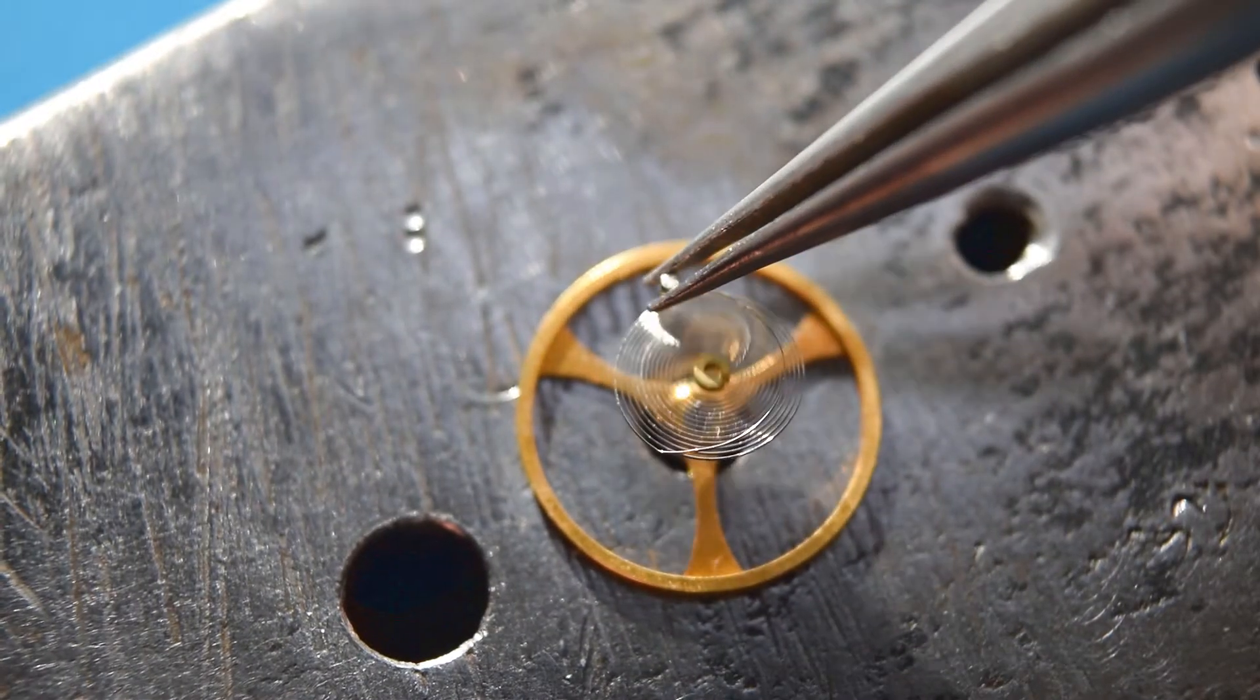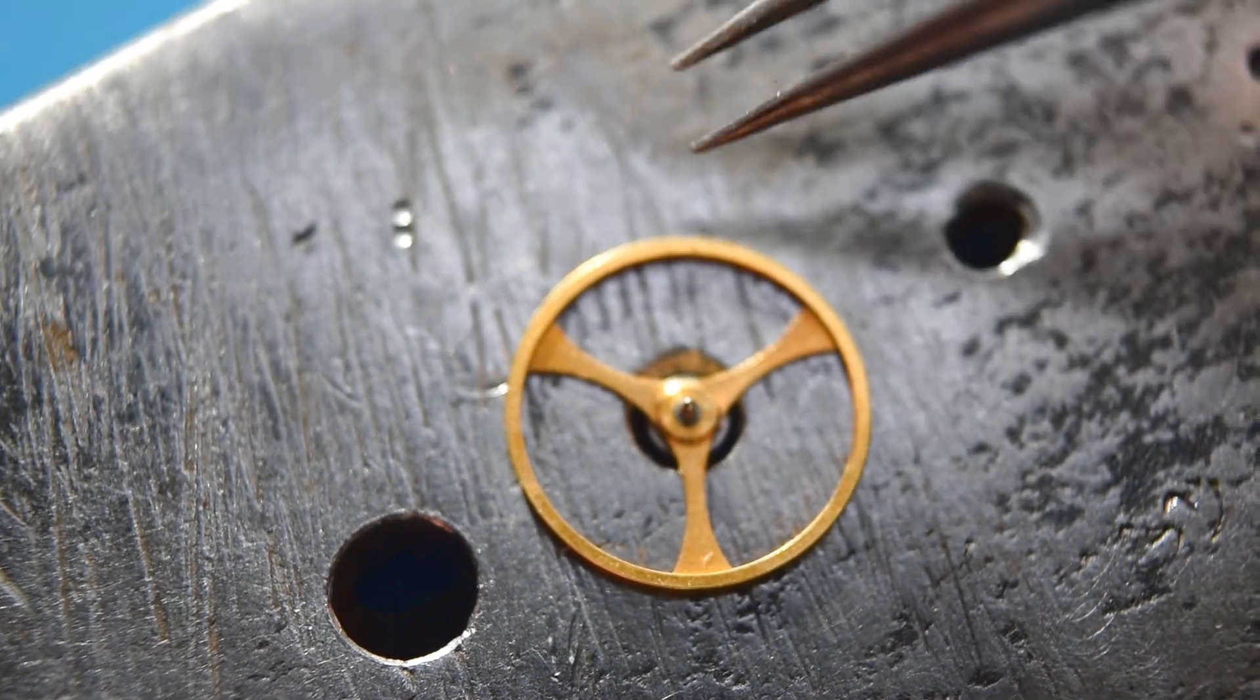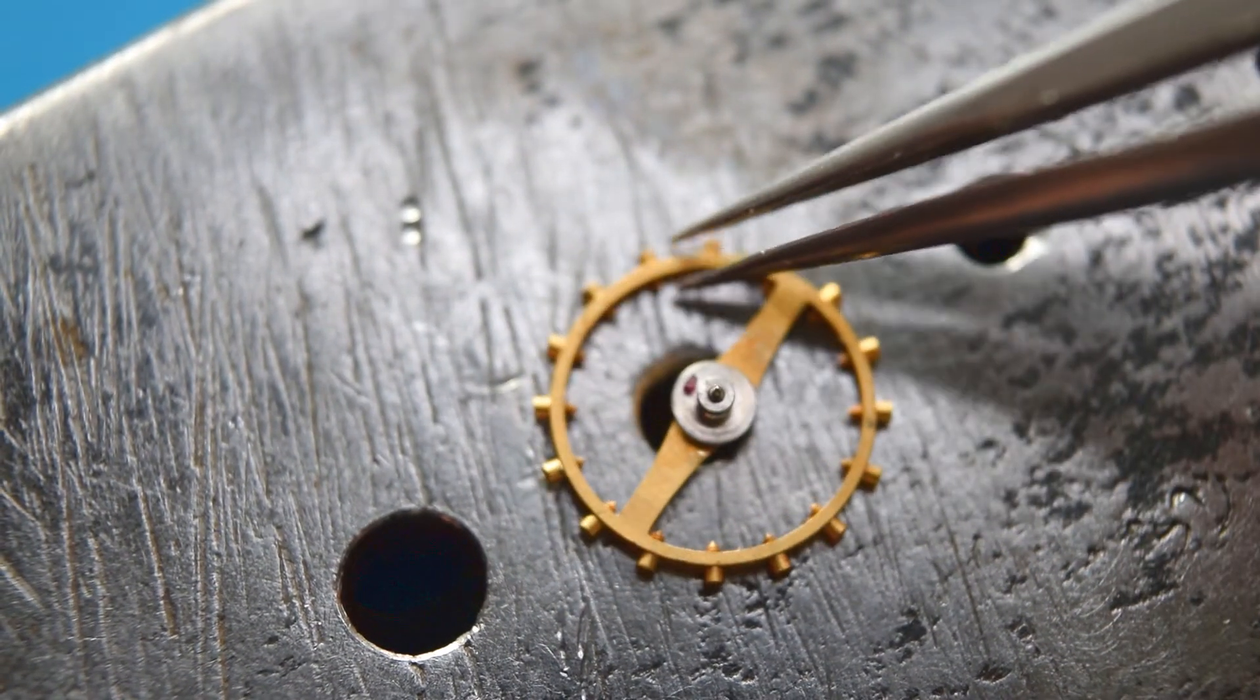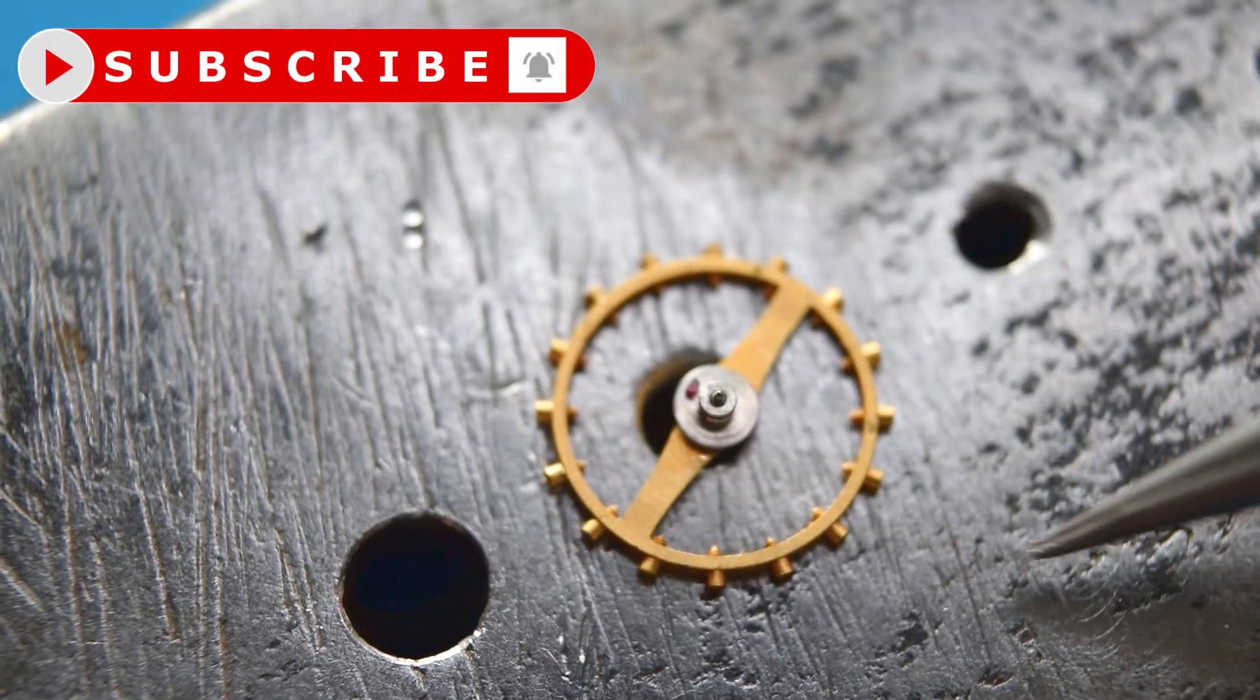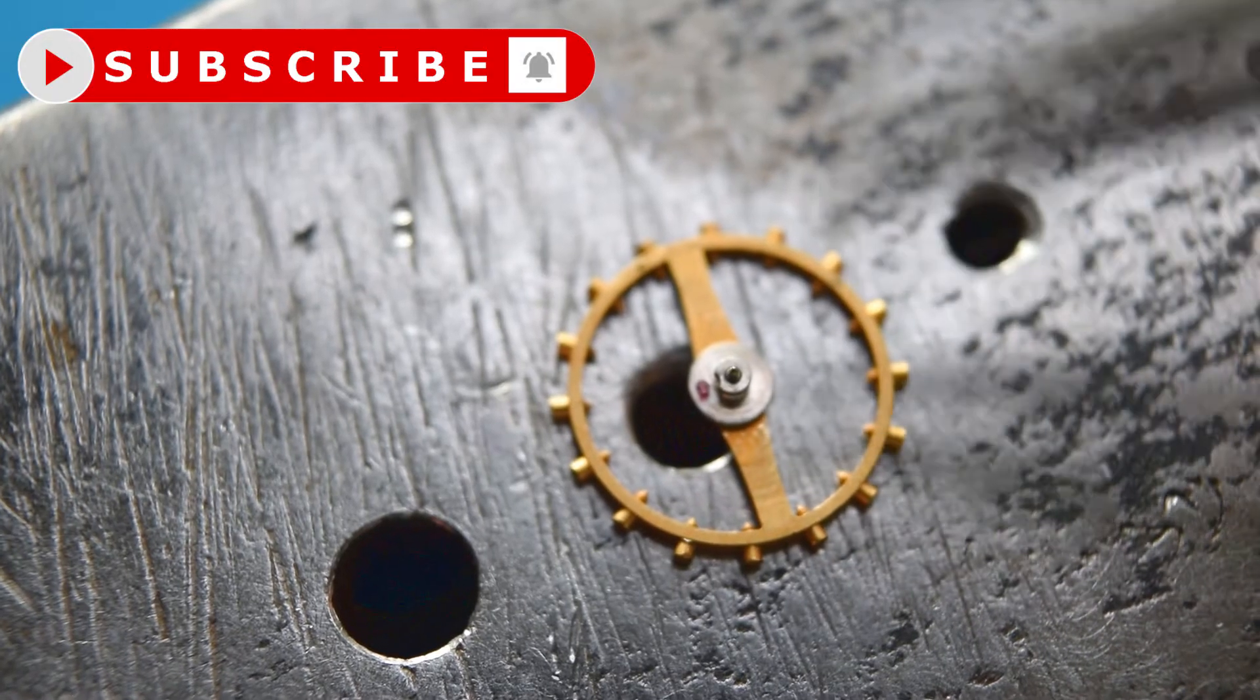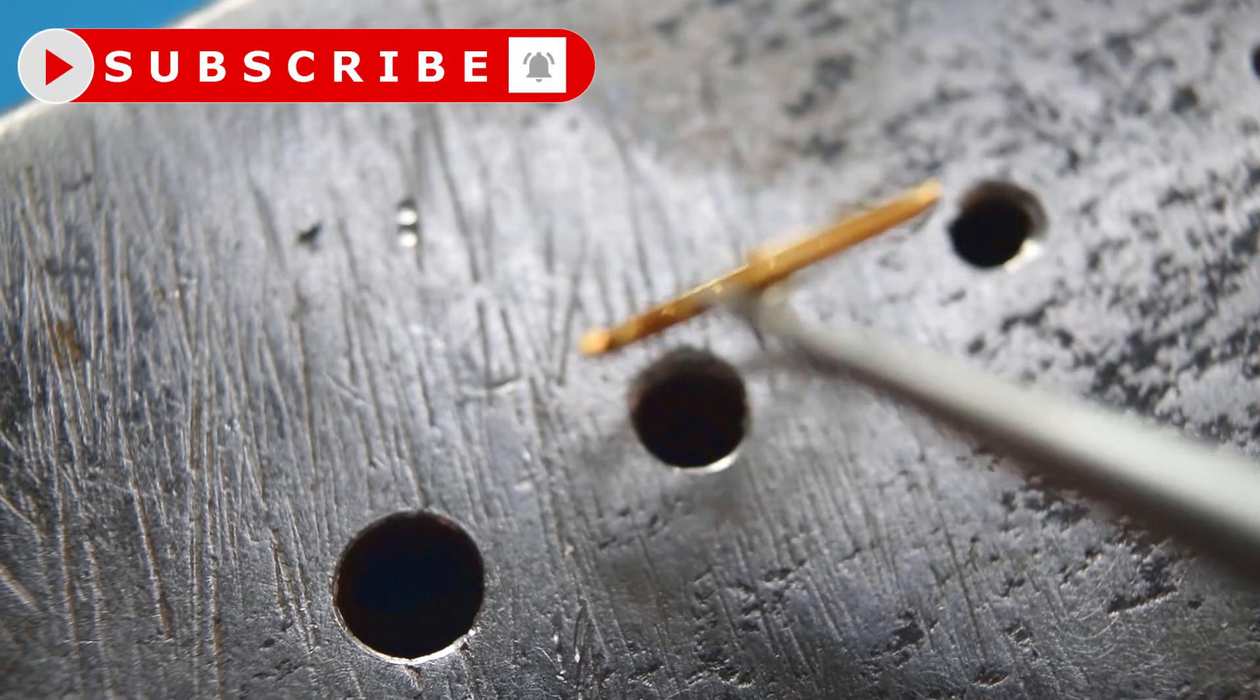So what I have done literally was exactly the same like you saw before. So that's my old balance wheel and here is the roller jewel and I need to install correctly the hairspring.